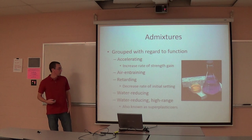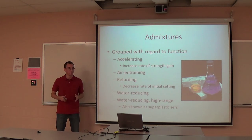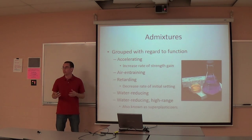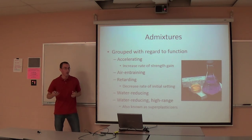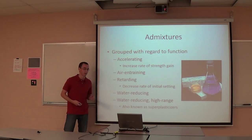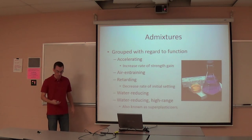The last set is water-reducing admixtures. You have normal range and high range. The normal range reduces water content by 5 to 10 percent, and the high range — known as superplasticizers — can reduce water content by 15 to 30 percent. What you're really getting at here is lowering that W/C ratio and increasing the strength of your concrete, while still keeping it workable enough to get into the formwork.